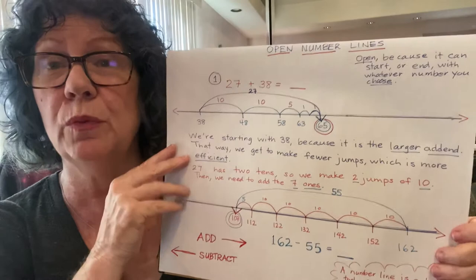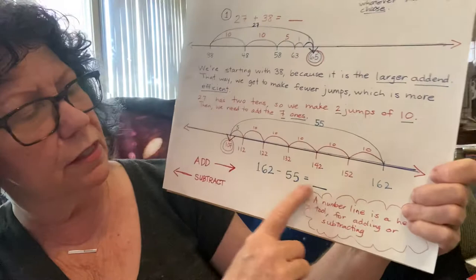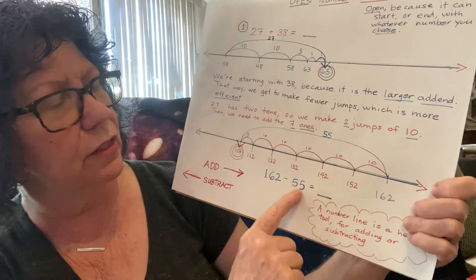And some of the vocabulary, as I said, these are addends. When we add the addends, we get a sum. This is a subtraction item. So we're getting a difference. So 162 minus 55 equals 107.